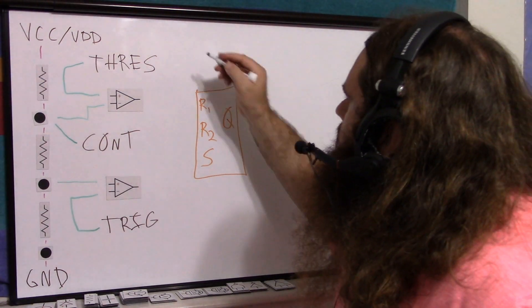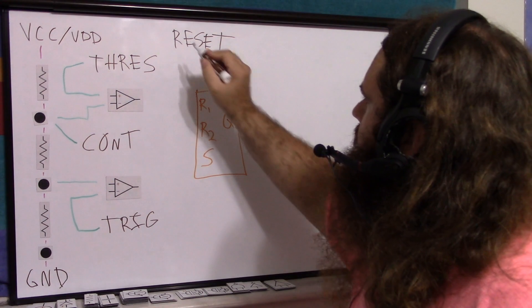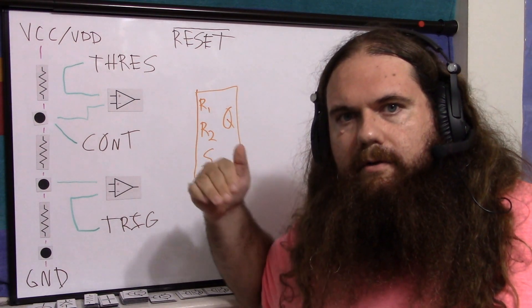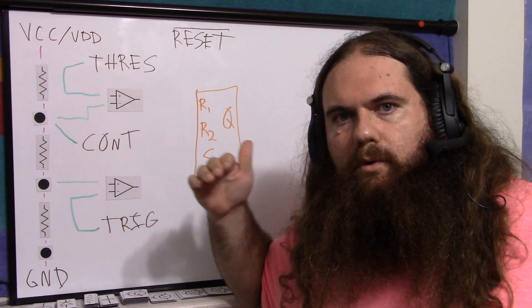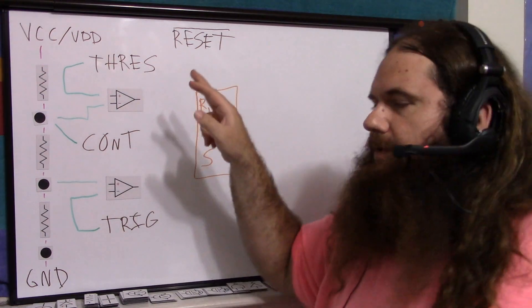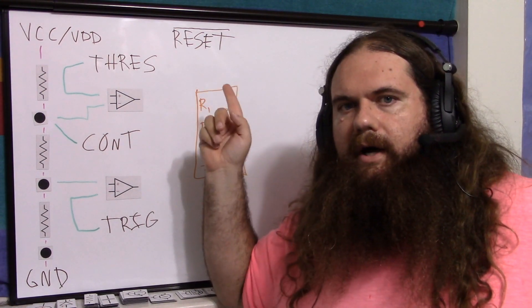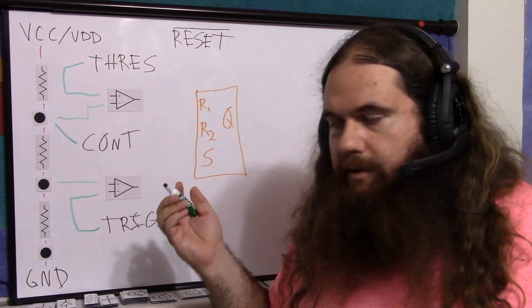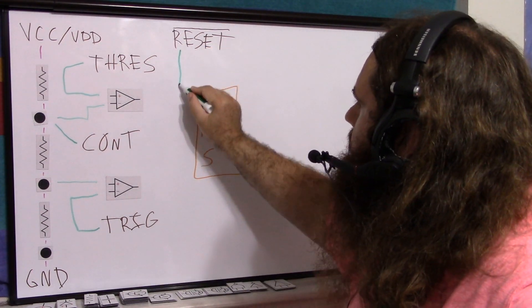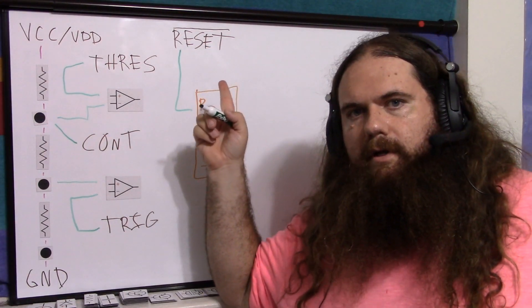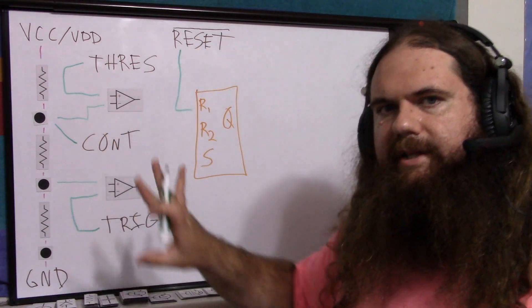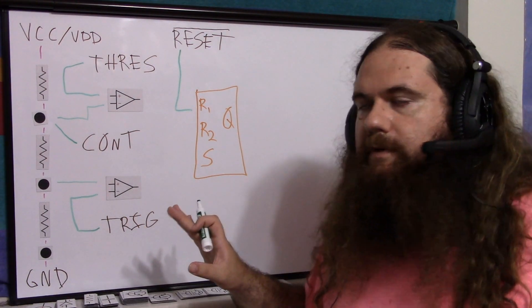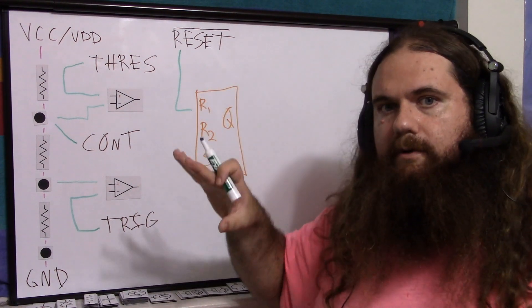So we have the reset pin. This is usually drawn with a bar over it, that indicates active low. Normally we say that 0 or low is false and 1 or high is true. But for this one, when you don't want to reset, you give it a high. When you do want to reset, you give it a low. I don't know why it's like that, it just works out better for the circuitry that way. So our active low reset goes here. Whenever you give a low to reset, no matter what anything else in the entire circuit is doing, your output is going to be low. The timer is going to be off. So it's a reset and a disable.